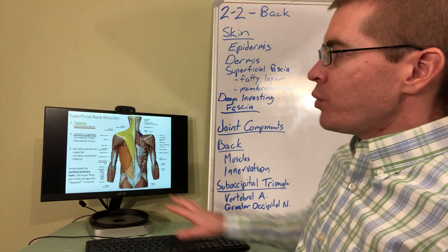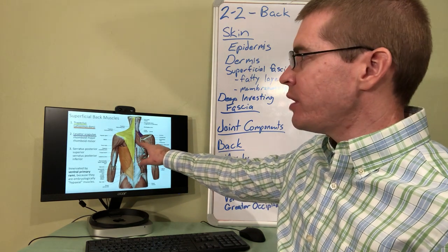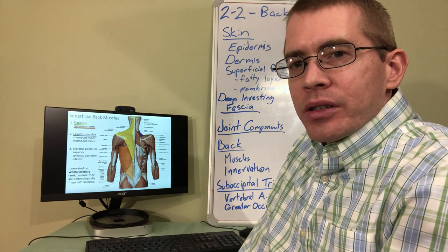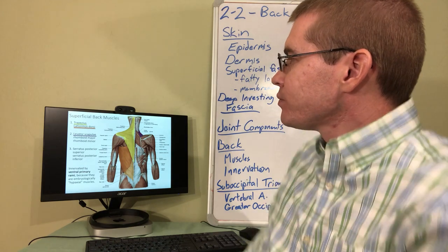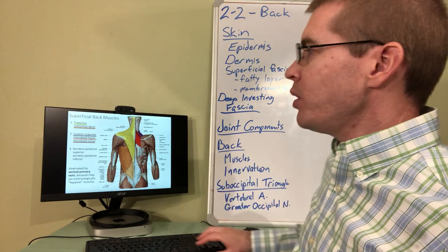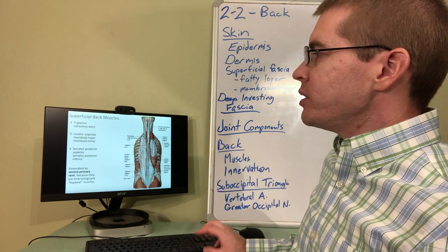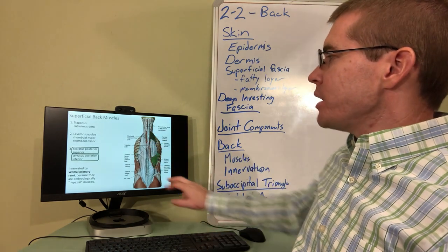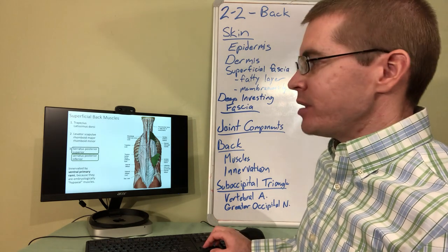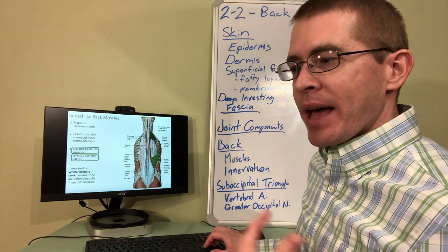Moving on, we have removed the trapezius and the latissimus dorsi so we can see some of the intermediate muscles of the superficial back. We can see levator scapulae, which as you would guess based on the name, elevates the scapular bone. Then we have rhomboid minor, which is more superior and smaller, with rhomboid major below it. As we move deeper, reflecting and removing those muscles, we see the serratus posterior superior as well as the serratus posterior inferior. That makes up all of the superficial back muscles, which are innervated by the ventral primary rami, defining them as hypaxial back muscles.